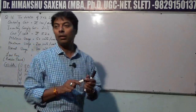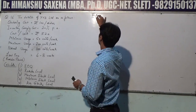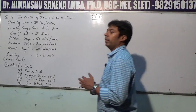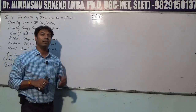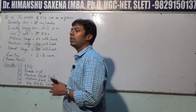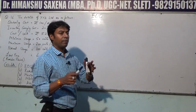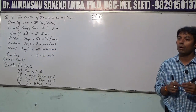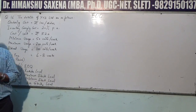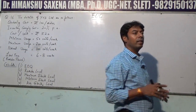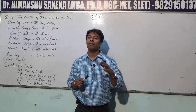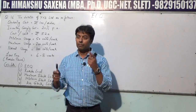Let's continue with Economic Ordering Quantity. We have done many illustrations in previous classes. EOQ denotes the optimum number of units an inventory manager should order — it is that level where total ordering costs equal total carrying costs. We have covered the standard EOQ model, EOQ with shortages, EOQ with finite rate of production, and various stock levels like reorder level, maximum, minimum, and average stock levels.